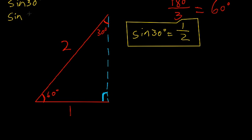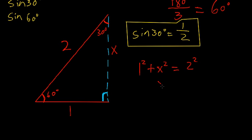What if we want to find sine of 60 degrees as well? When you have a right triangle and know two of the sides, you can always find the third using the Pythagorean theorem. I'll label the remaining blue side as x and write out the theorem: 1 squared plus x squared equals 2 squared. So x squared equals 4 minus 1, which is 3. Therefore x equals the positive square root of 3. Now I'll replace x with square root of 3.